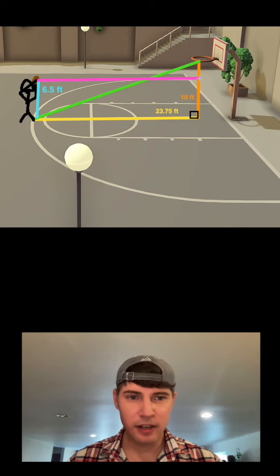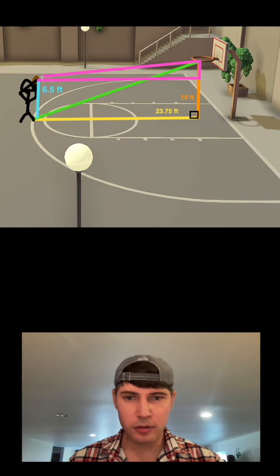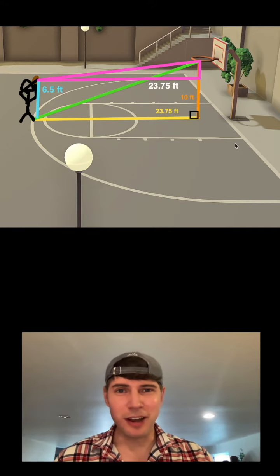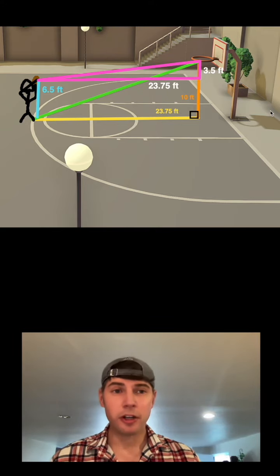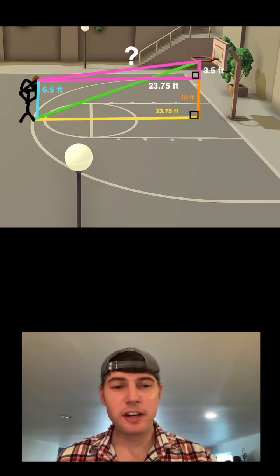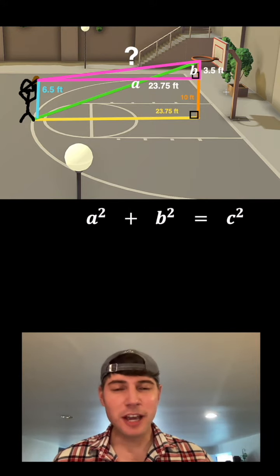So in reality, this is the triangle we're really interested in, from here up to the basket and over to my hands. The base is still 23.75 feet, but the height is now 10 minus 6.5 feet, or in other words, 3.5 feet. This right here is still a right triangle. That didn't change, so I can still use a² + b² = c².